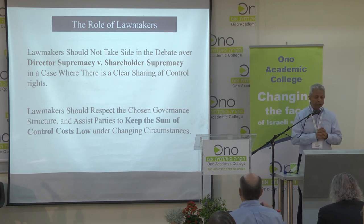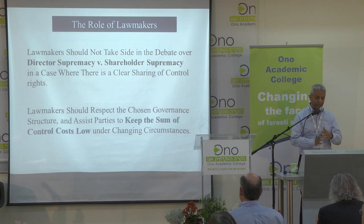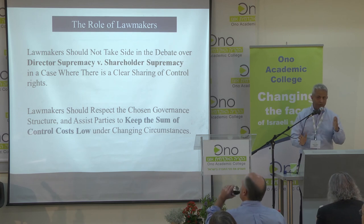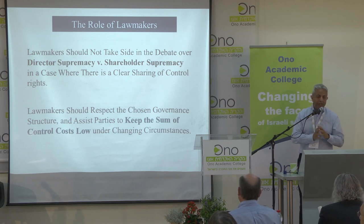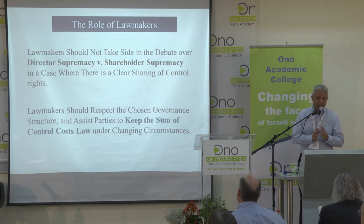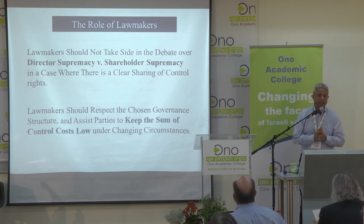What should lawmakers do? They should respect the chosen governance structure — whatever that is: concentrated ownership, dual class, dispersed ownership. The only thing they should do is assist the parties to keep the sum of control costs low under changing circumstances.